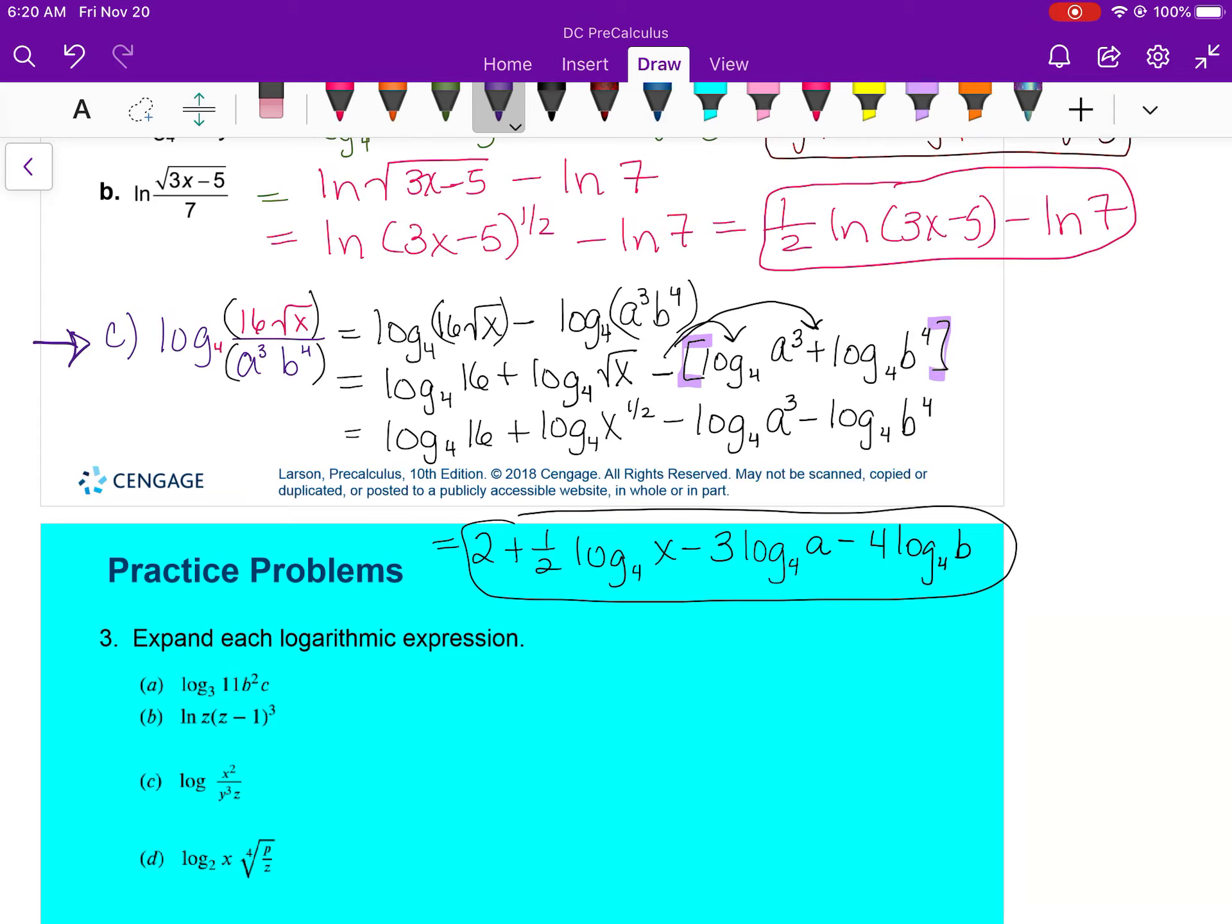All right, hour one. So what we did: we took our numerator and our denominator and we split that as the logarithm of a subtraction problem. So we did the log of 16 radical x minus the log of 4a to the third b to the fourth. Then within each term we split the multiplication up with addition, and the purple brackets indicate that you need to subtract the sum for the second term.